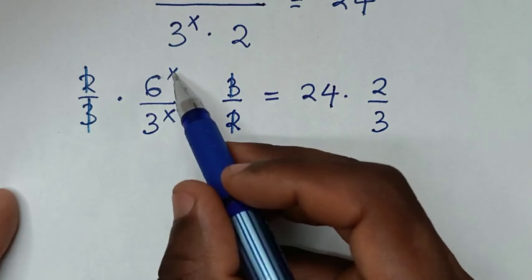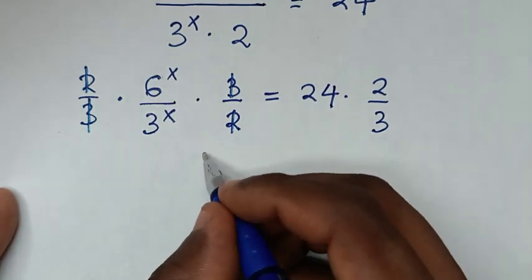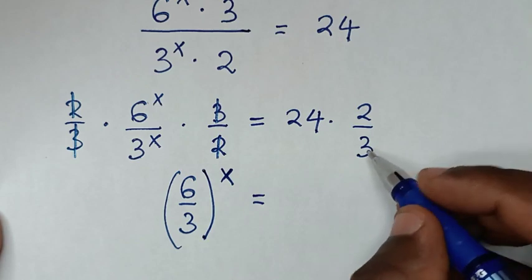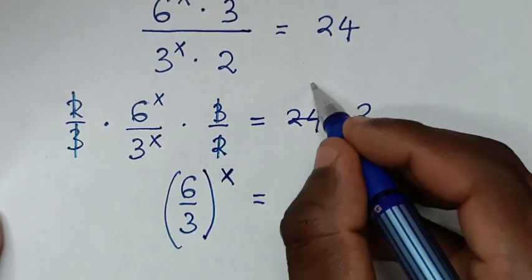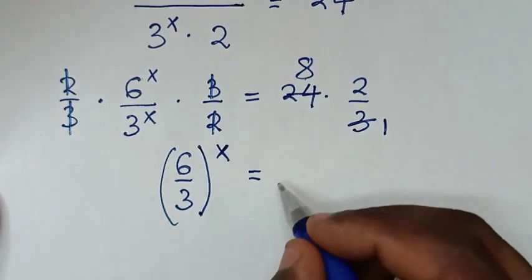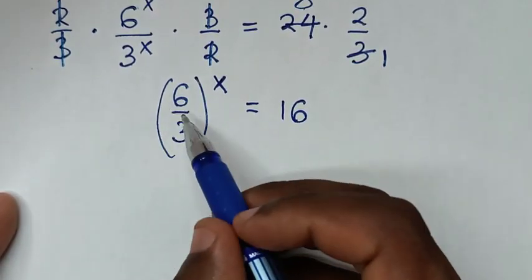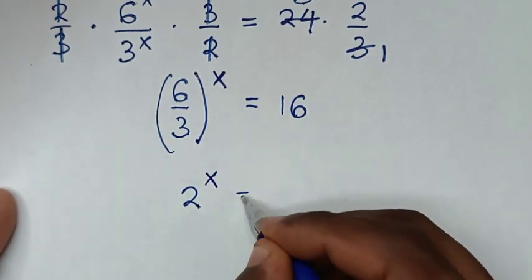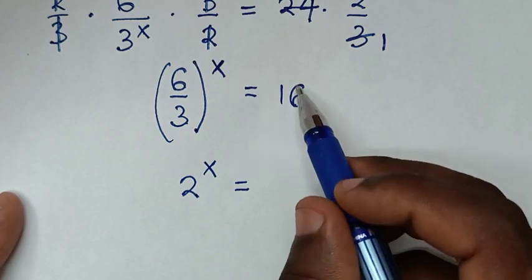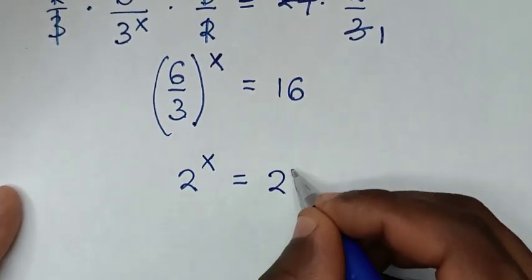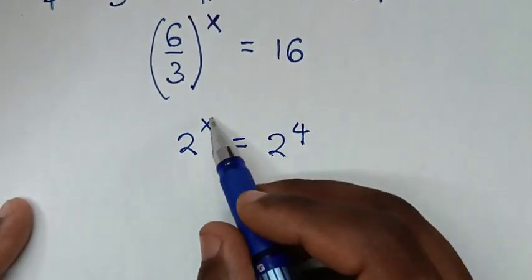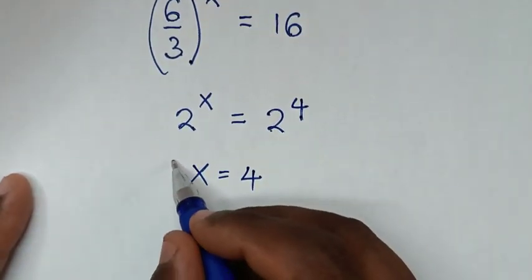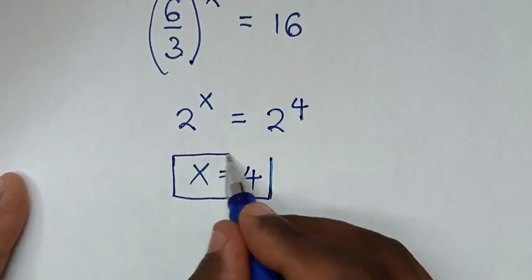Since 6 power x over 3 power x have the same power of x, it simplifies to 6 over 3 power x, which is 2 power x. So 2 power x equals 24 times 2 over 3, which is 16. In terms of base 2, 16 is 2 power 4. Since the bases are the same, we compare the powers and x equals 4. Therefore x equals 4 is the final answer.